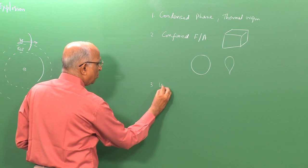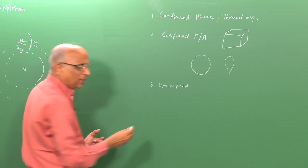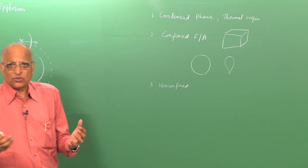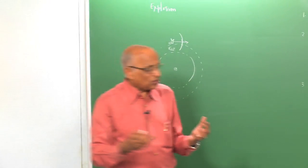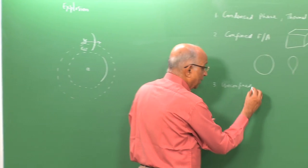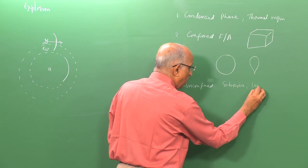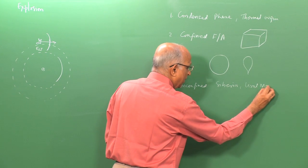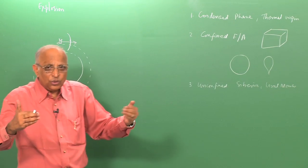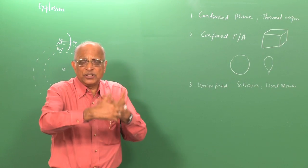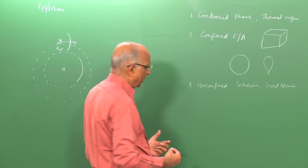The third category was unconfined explosions. In this case, we looked at spillage, such as gas spilled as seen in Siberia in the Ural mountains, where spillage goes along the ground, two trains pass in opposite directions, mixing it with air, a spark occurs, and it explodes. These are unconfined explosions.